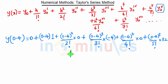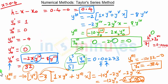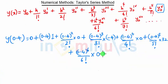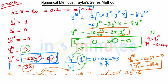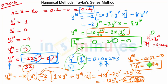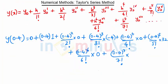So into 32, plus h raised to 6, that is 0.4 raised to 6 upon 6 factorial, times y0 sixth derivative, which we have calculated and is 0. Plus h raised to 7, that is 0.4 raised to 7 upon 7 factorial, times the y0 seventh derivative, which we have calculated and is minus 384.